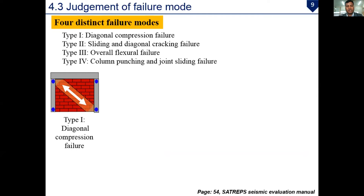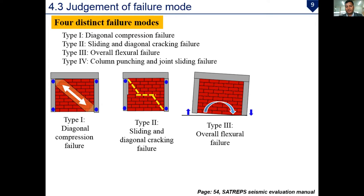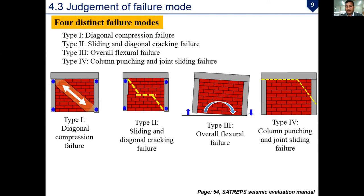In diagonal compression failure (Type 1), the masonry infill fails by diagonal compression and hinges form at the top and bottom of both columns. Type 2 is sliding and diagonal cracking failure, where sliding and cracking are observed in the infill and hinges form at the top and bottom of the columns. Type 3 is overall flexural failure, where the masonry infill wall acts as a cantilever or shear wall. Type 4 is column punching and joint sliding failure, where the column is punched at the beam-column joint and joint sliding failure is observed between the beam and the masonry infill.